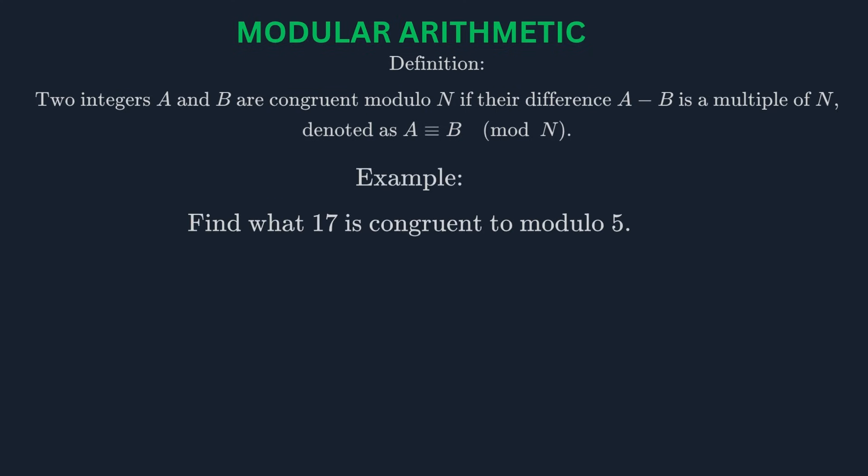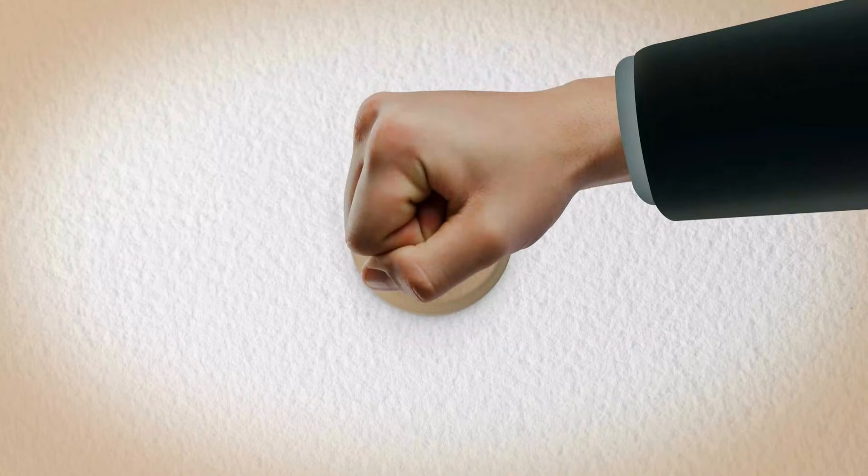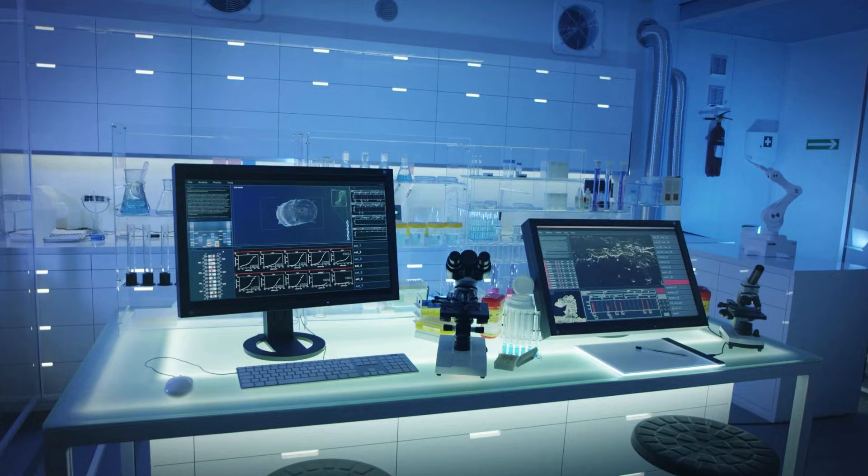Let's look at an example. What is 17 congruent to modulo 5? We divide 17 by 5. The quotient is 3 and the remainder is 2. So 17 is congruent to 2 modulo 5. This means that 17 and 2 have the same remainder when divided by 5. Modular arithmetic is incredibly important in computer science, especially in cryptography. It's the mathematical basis for secure communication on the internet.